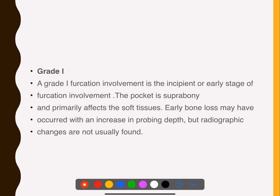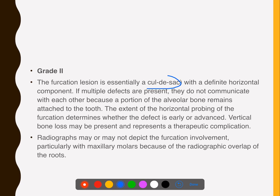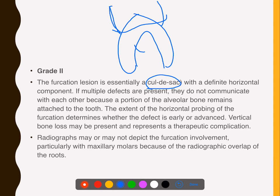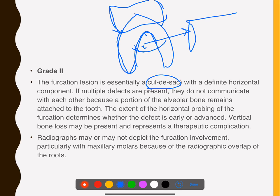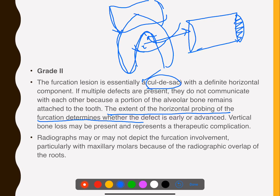For Grade 1, the pocket is suprabony and affects soft tissues only. For Grade 2, it is a cul-de-sac — when you probe, you feel it from one side but the other is closed. The extent of horizontal probing determines whether the furcation defect is early or advanced, because treatment differs between early and advanced defects. Grade 3 differs from Grade 4 in that in Grade 3 the opening may be filled with soft tissue and not visible, whereas Grade 4 is a true through-and-through tunnel.